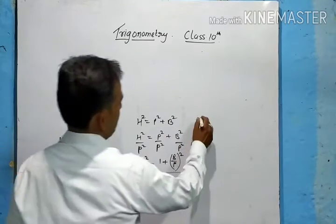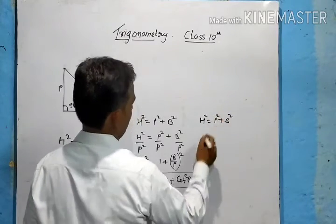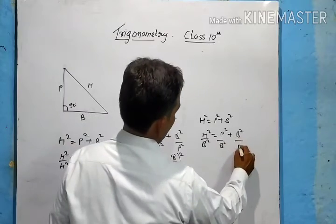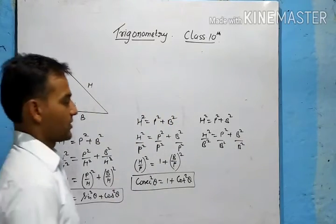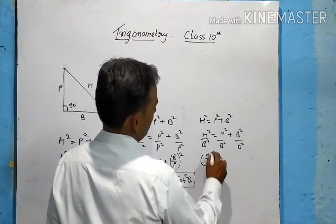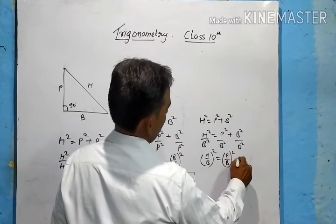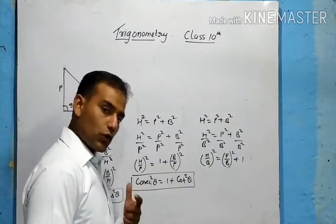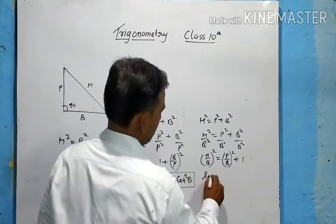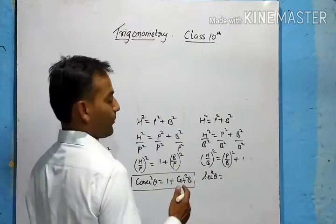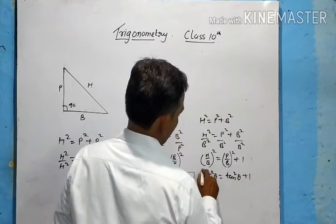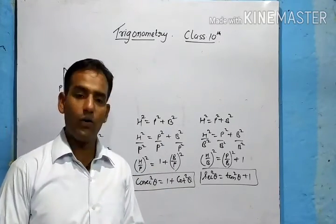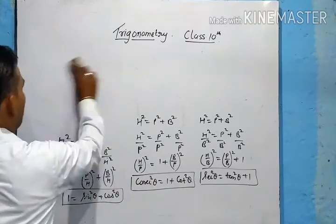For the third identity, divide all terms of hypotenuse² = perpendicular² + base² by base²: (H/B)² = (P/B)² + 1, giving sec²θ = tan²θ + 1, since H/B = sec θ and P/B = tan θ. These are small derivations to show how all three identities come from Pythagoras theorem. They are all from class 9 but we need to recall them before starting class 10 trigonometry.